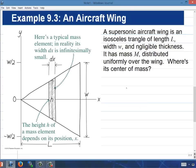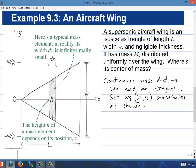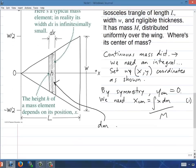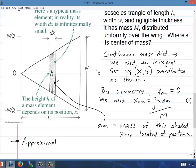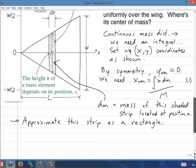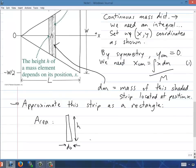So let's definitely do an example of that. Example 9.3 from your text says a supersonic aircraft wing is an isosceles triangle of length L with W and negligible thickness. It has mass M distributed uniformly over the wing. Where is its center of mass? So this is a continuous mass distribution. We need an integral. There's a nice little diagram of it. They've already set up the XY coordinates with the origin at the pointy part of the wing and the X axis right down the center of the wing. So by symmetry, the Y position of the center of mass must be zero. So we need to do an integral to find the X position of the center of mass. Integral of X dm over m, and that's equation 1. Little dm is the mass of this shaded little strip here that's located at position X. So we can approximate this as a rectangle. It's going to have height h as defined in that diagram and width dx. So its area, area of the strip, will be h times dx.